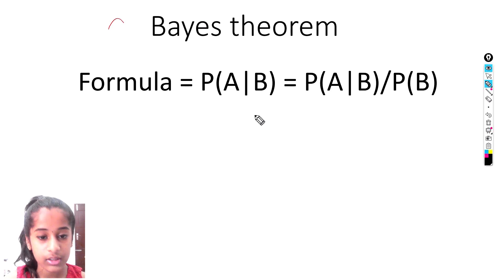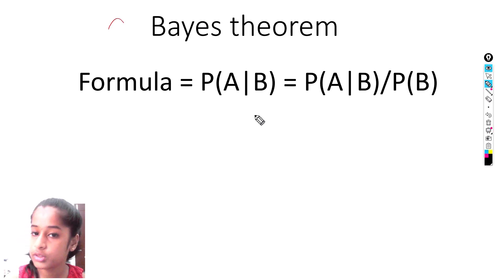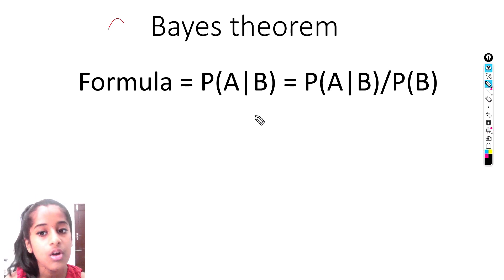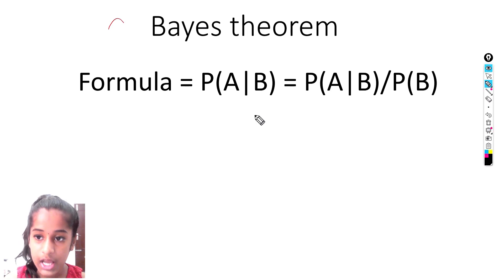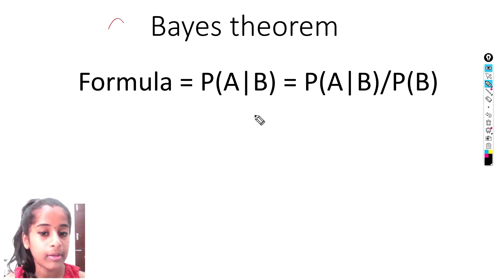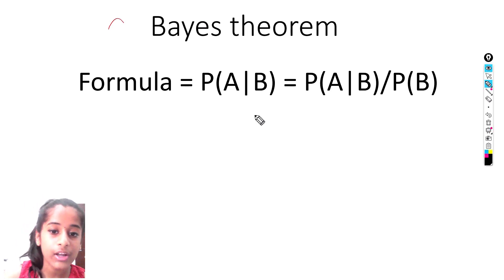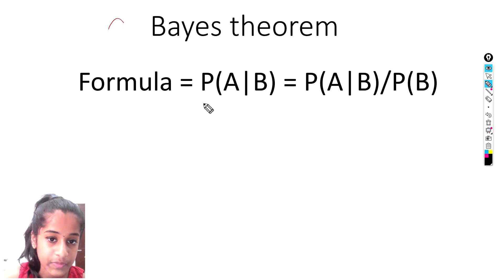So this is the formula of probability that we are going to see. Probability of A given B is equal to probability of A and B divided by probability of B. Now let's convert it into the Bayes' theorem formula.